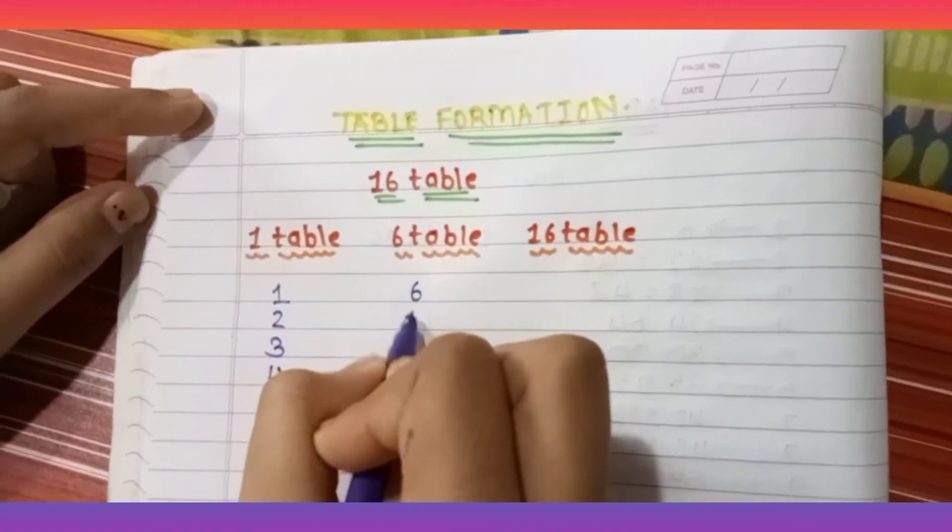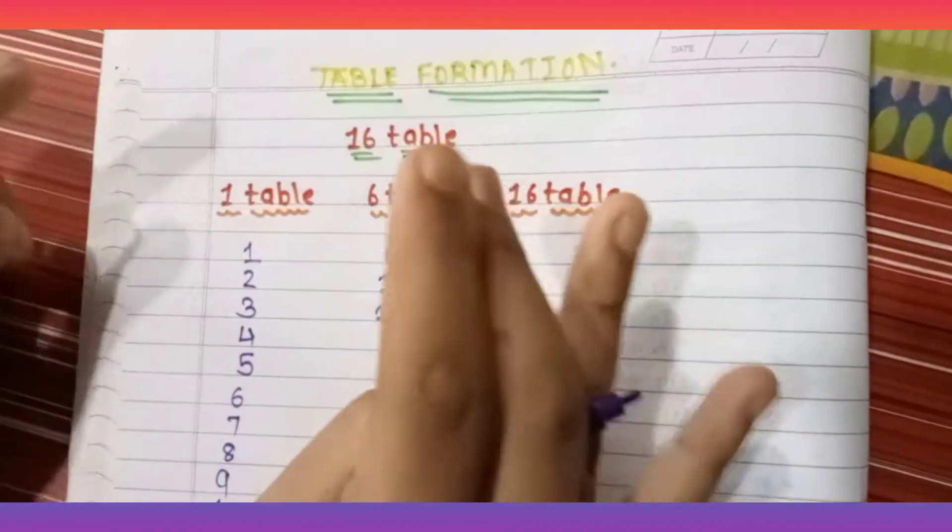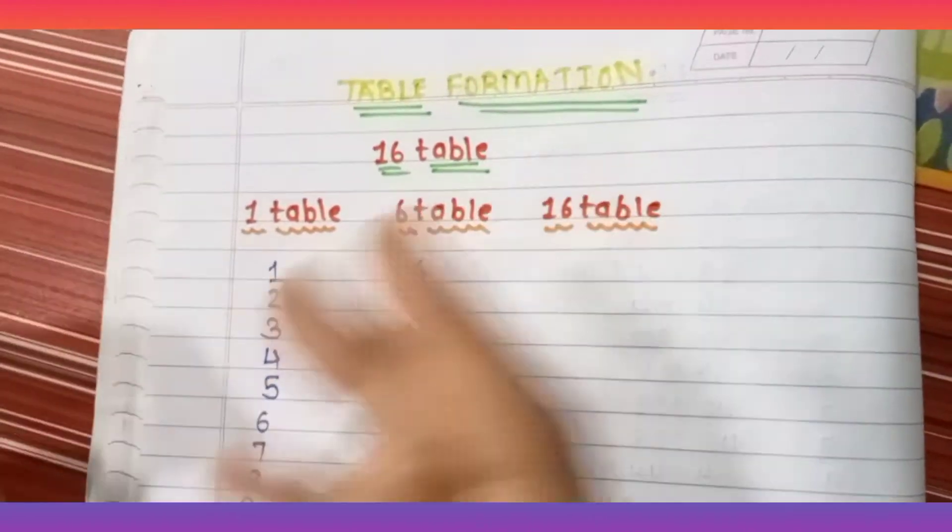Now write the 6 table: 6 times 1 is 6, 6 times 2 is 12, 6 times 3 is 18. For learning 1 to 10 table it will not take so much time.